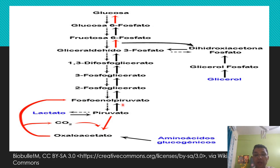Phosphoenolpyruvate, through enzyme action, is converted to 2-phosphoglycerate, then 3-phosphoglycerate, then 1,3-diphosphoglycerate. All of these steps involve enzymatic actions.